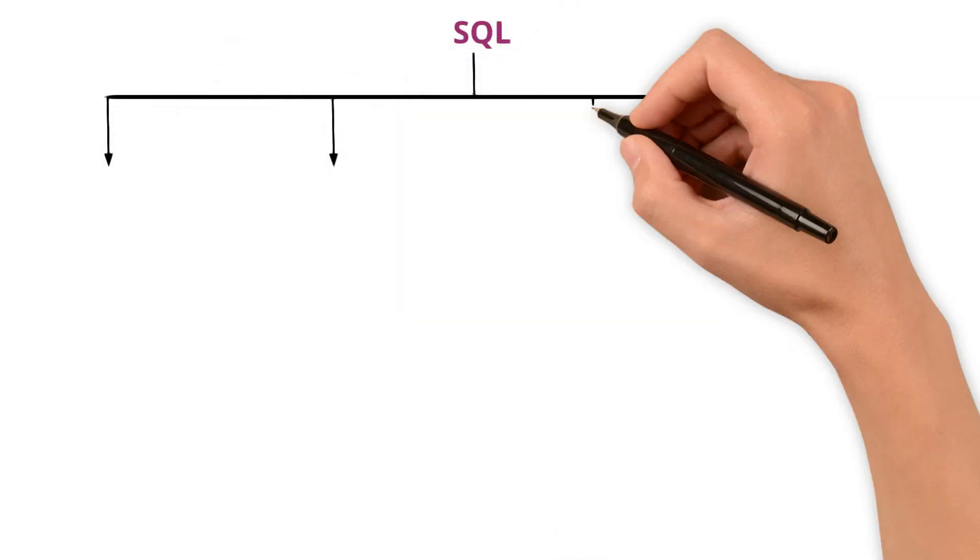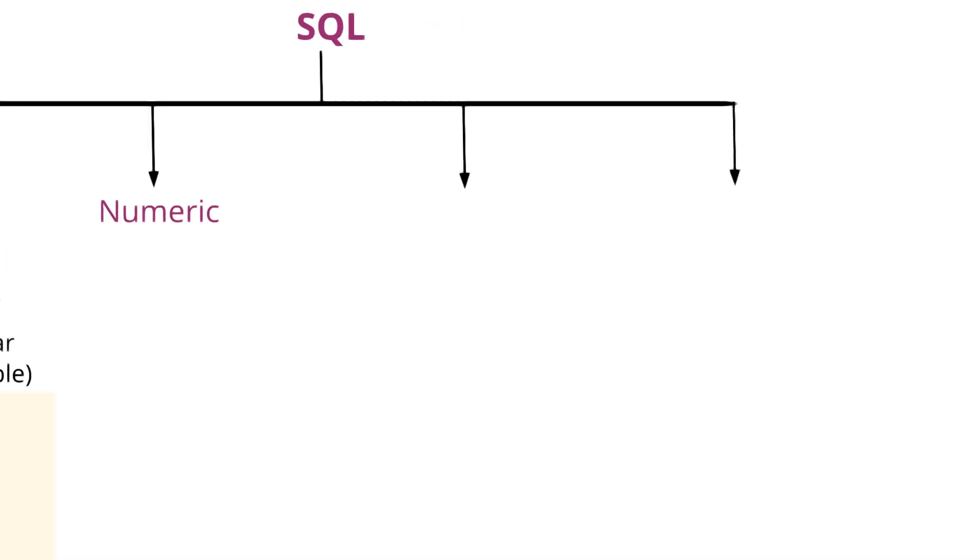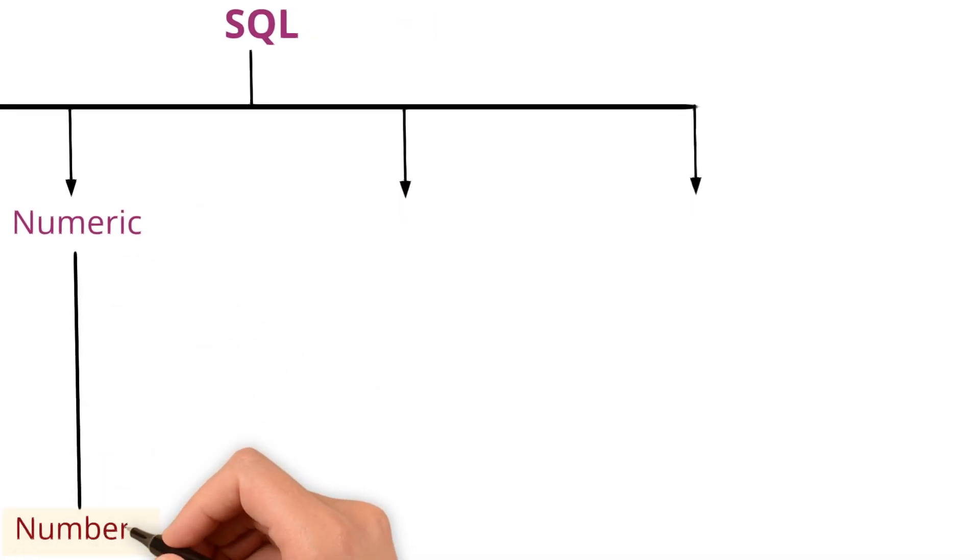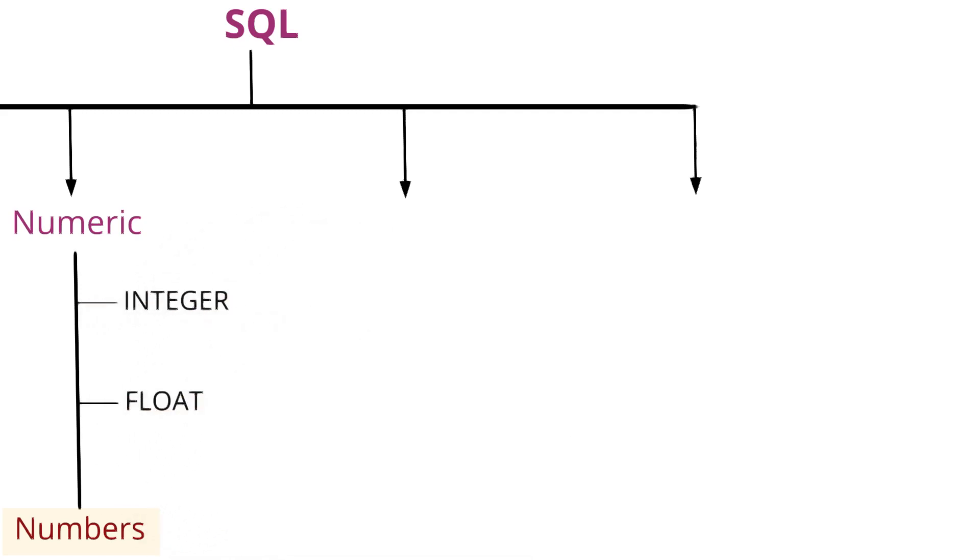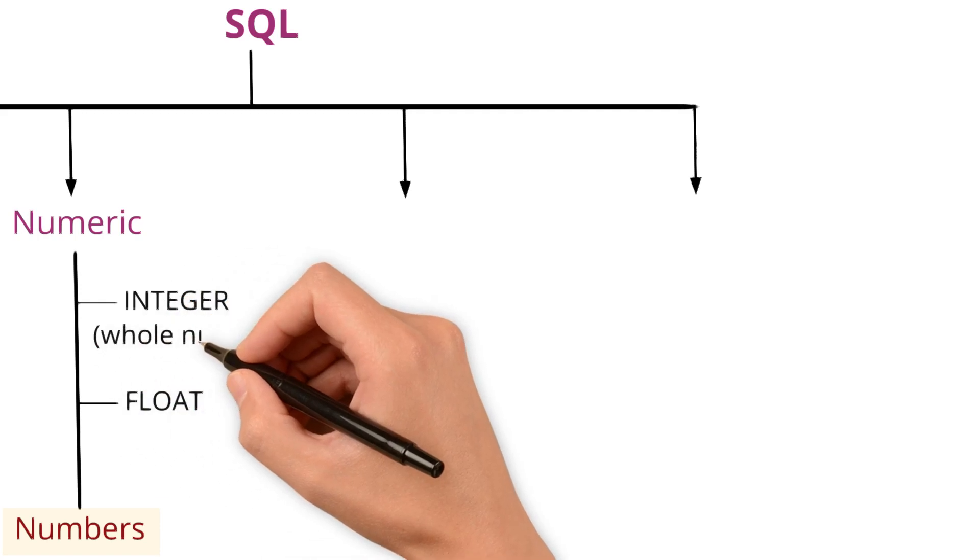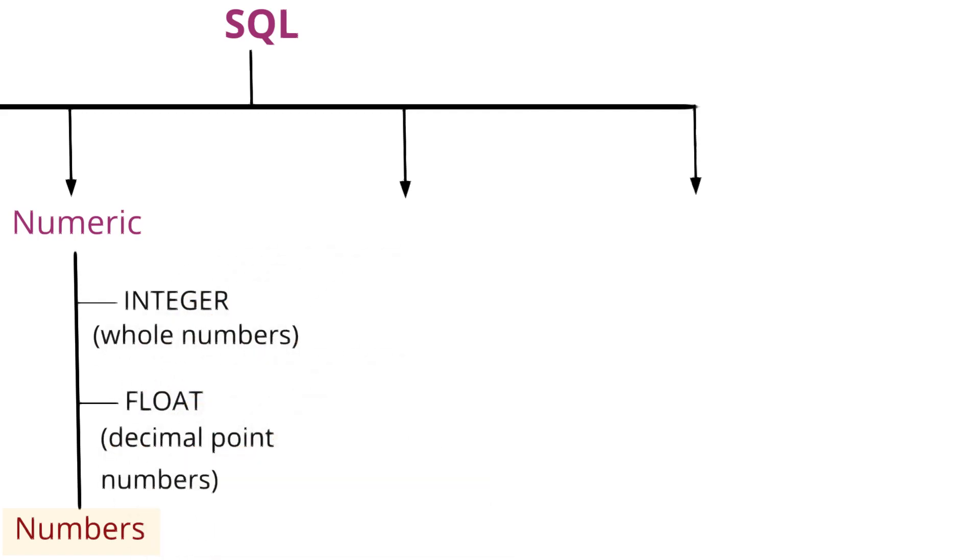Our next data type is numeric. This is used to store only numbers. The typical data types are integer and float. Integer is used to store whole numbers, while float is used to store decimal point numbers.